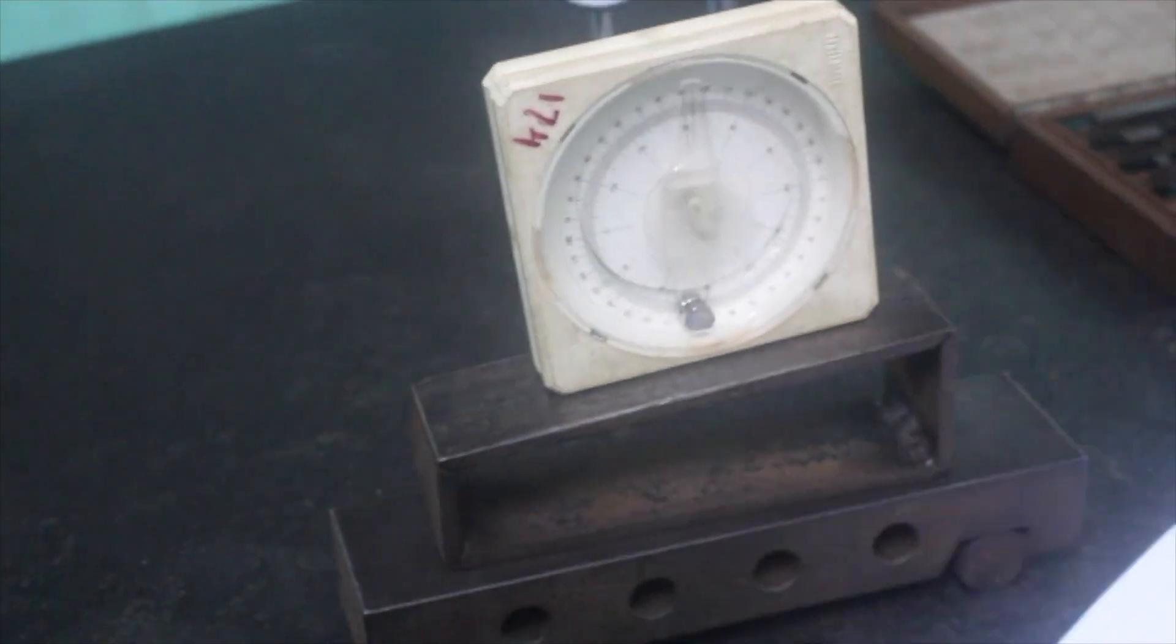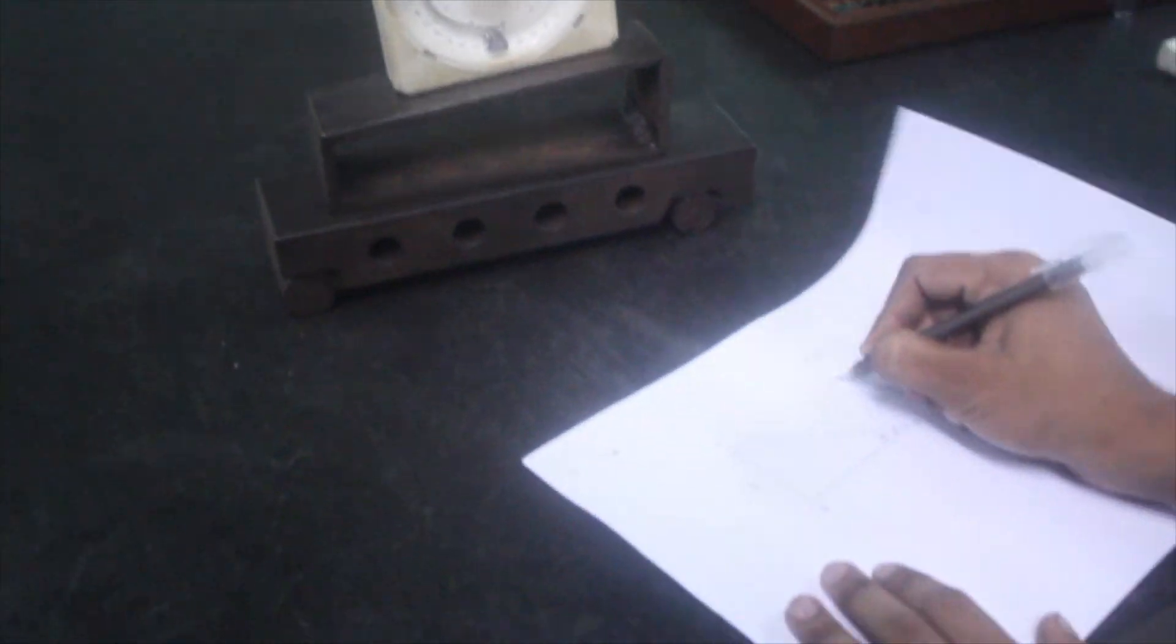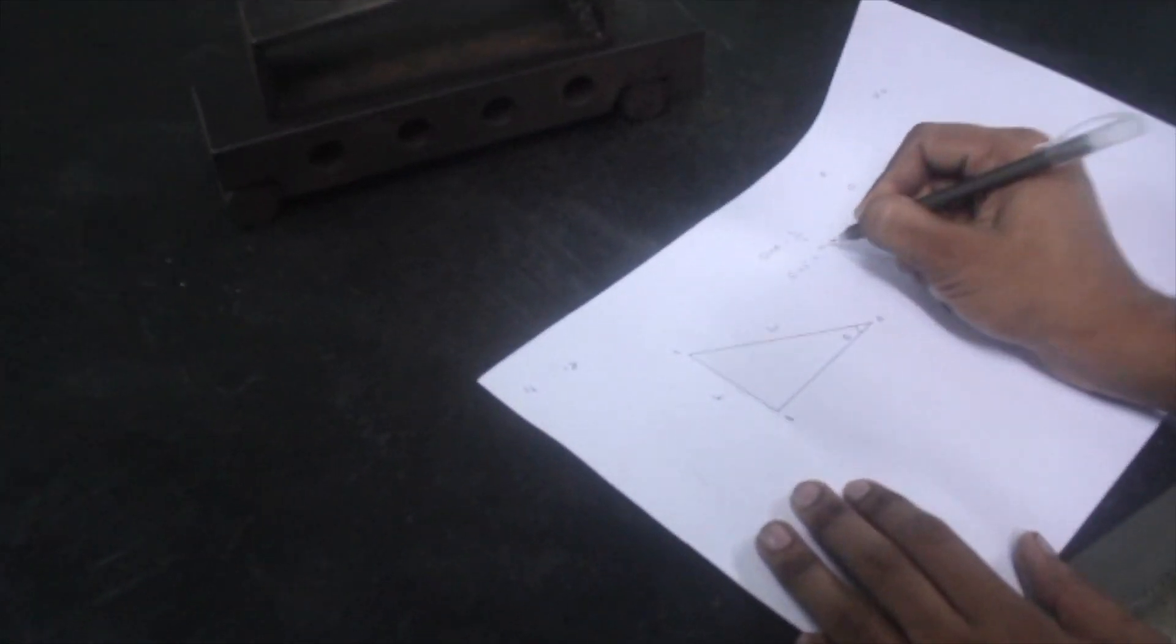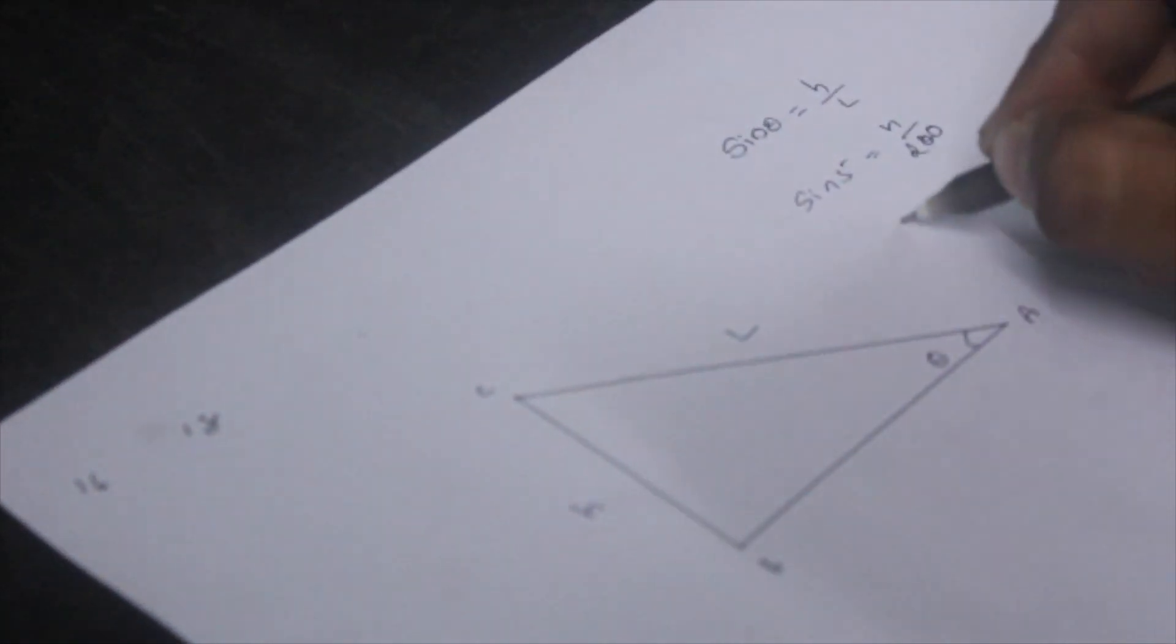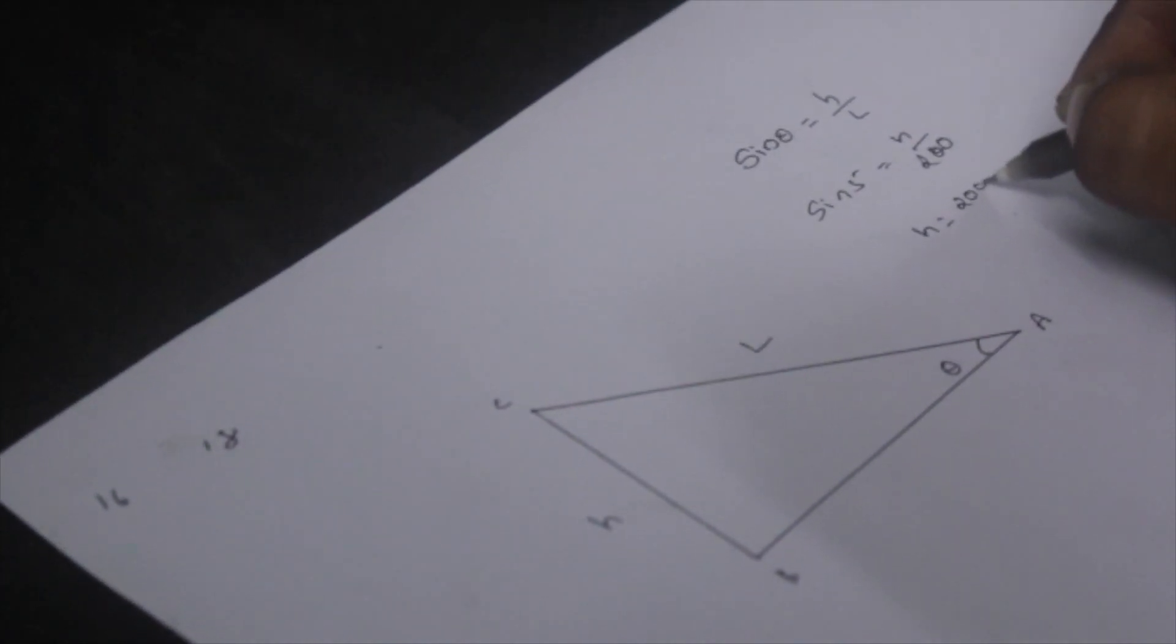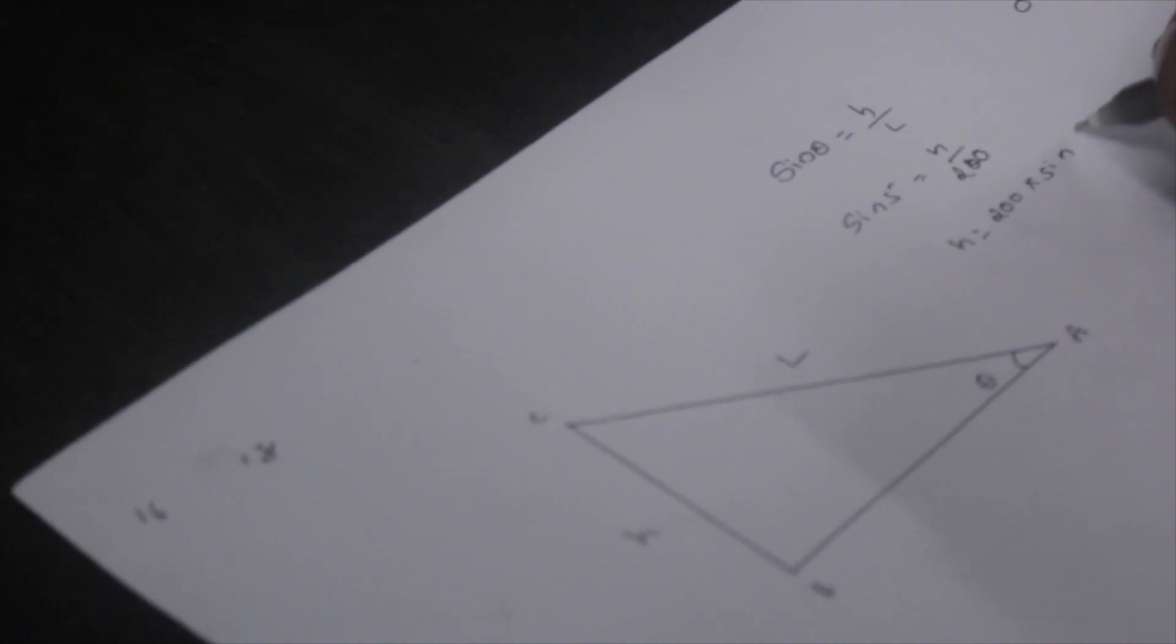If we take θ = 5°, then sin 5° = H/L. L is 200 mm. From which H = 200 × sin 5°, so we get that as about 17.8 mm.